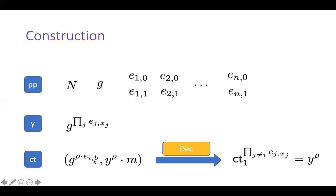For decryption, we get the preimage x such that x_i equals b. The decryptor exponentiates the ciphertext with the product of E_{j,x_j} values — just as when evaluating the one-way function — but ignores the i,b entry because it's already part of the ciphertext. This yields y^ρ, and given y^ρ and y^ρ times the message, you can recover the message.